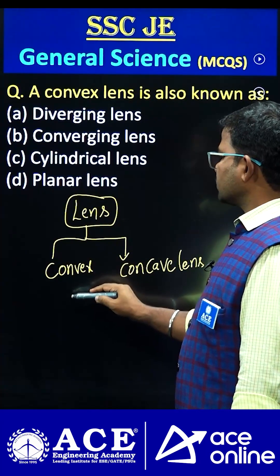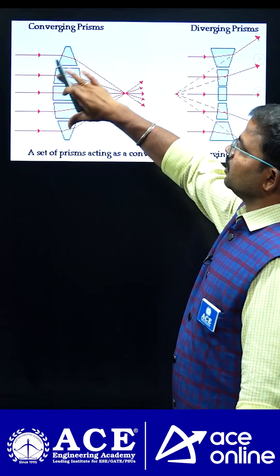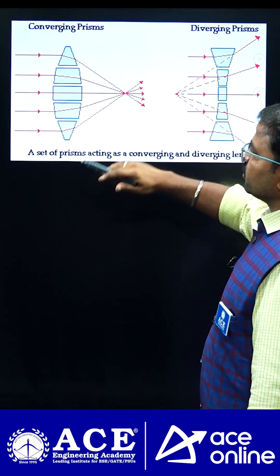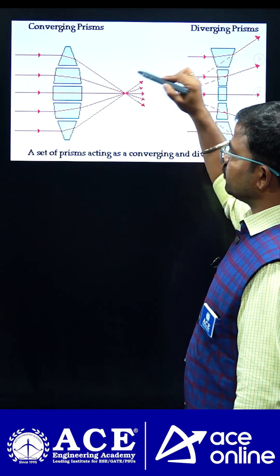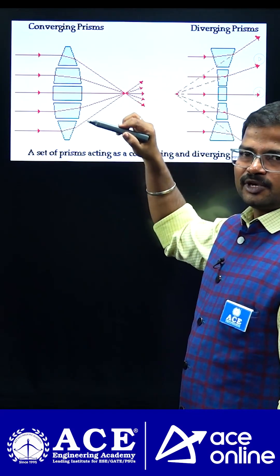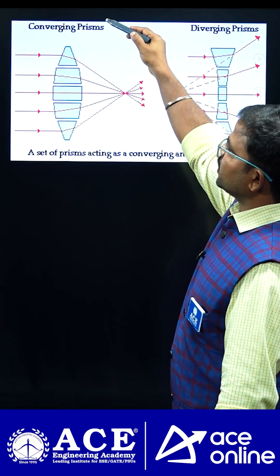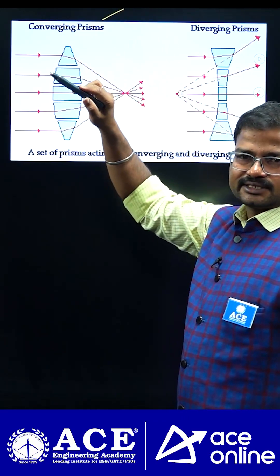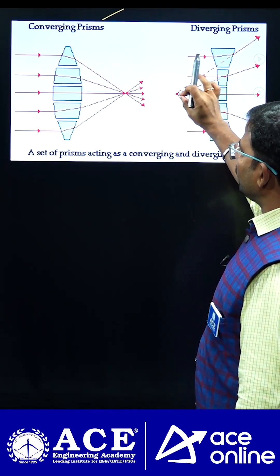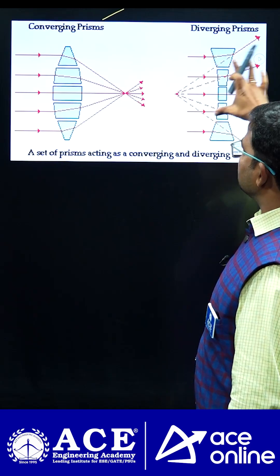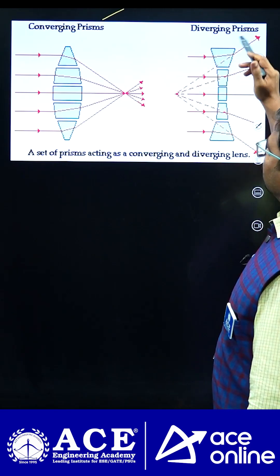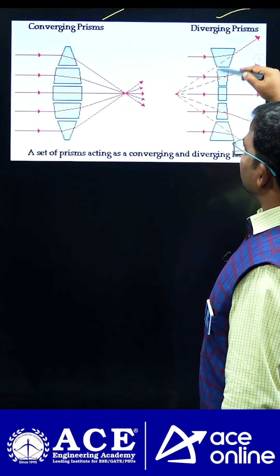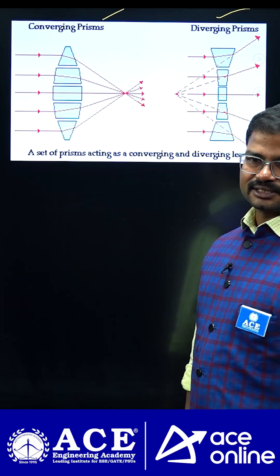So, convex lens is looking like this. When light is transmitted through a convex lens, almost all the rays are measured at one point. Because of that, these type of lenses are considered as converging lenses. What about diverging lenses? From one point, light is deviated mostly like this. Because of that, these type of lenses are called as diverging lens.